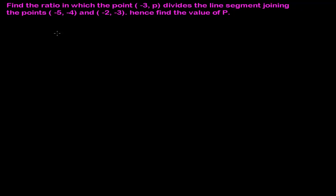Another question on finding ratio. The question says: find the ratio in which the point (-3, p) divides the line segment joining the points (-5, -4) and (-2, -3). Hence find the value of p.